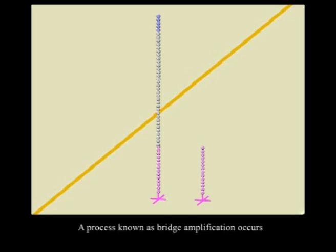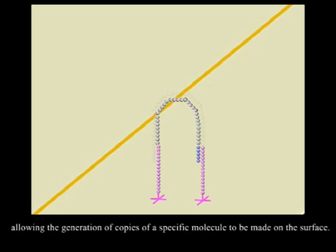A process known as bridge amplification occurs, allowing the generation of copies of a specific molecule to be made on the surface.